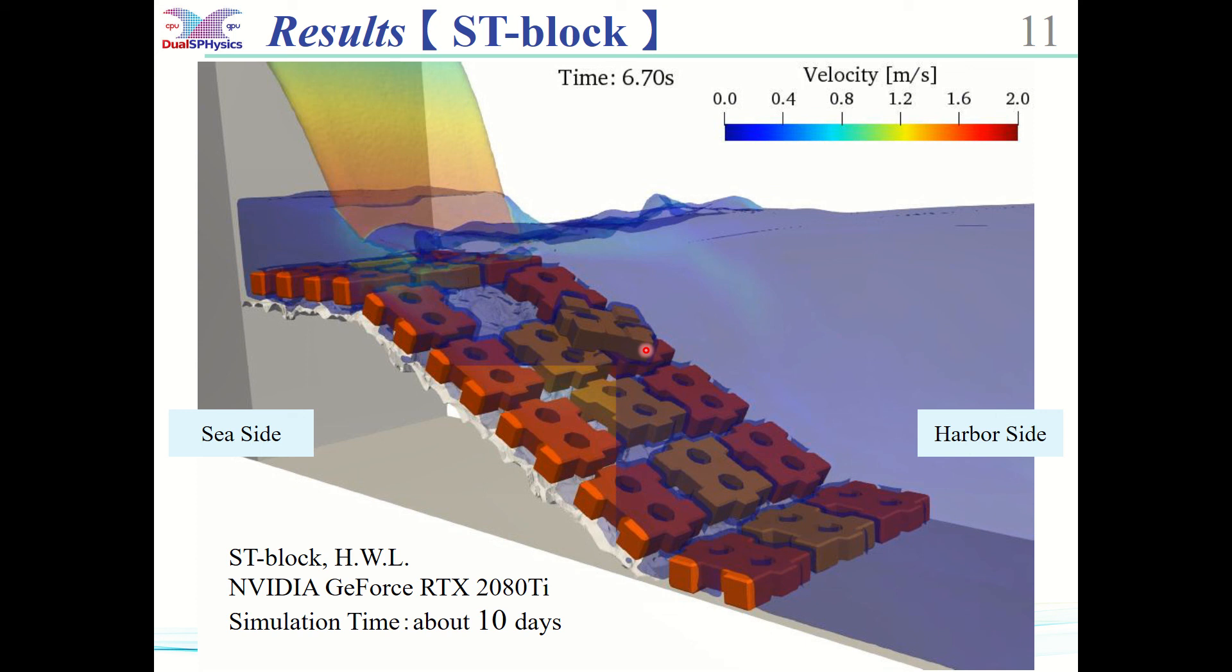Physical experiments have shown that HC block slides and then scatters, while ST block does not slide but scatters, which is the same tendency as simulation. We can conclude that the scattering process of the armor blocks can be reproduced by numerical simulation.